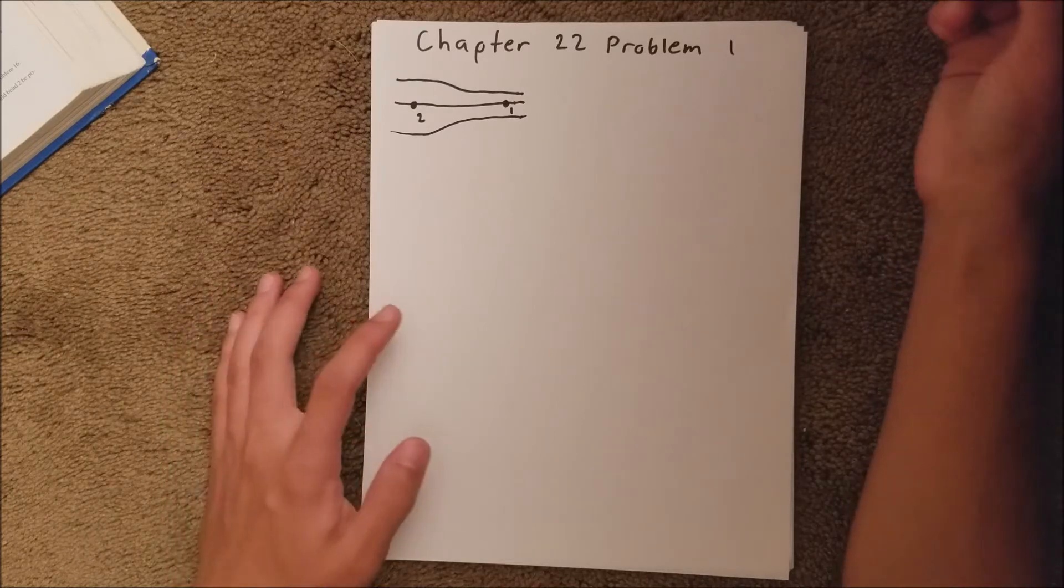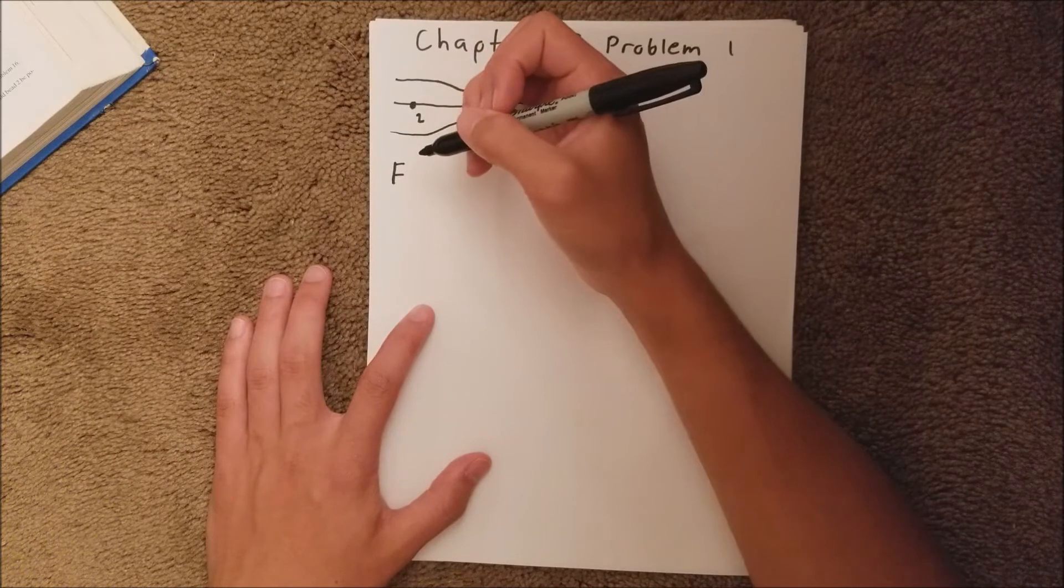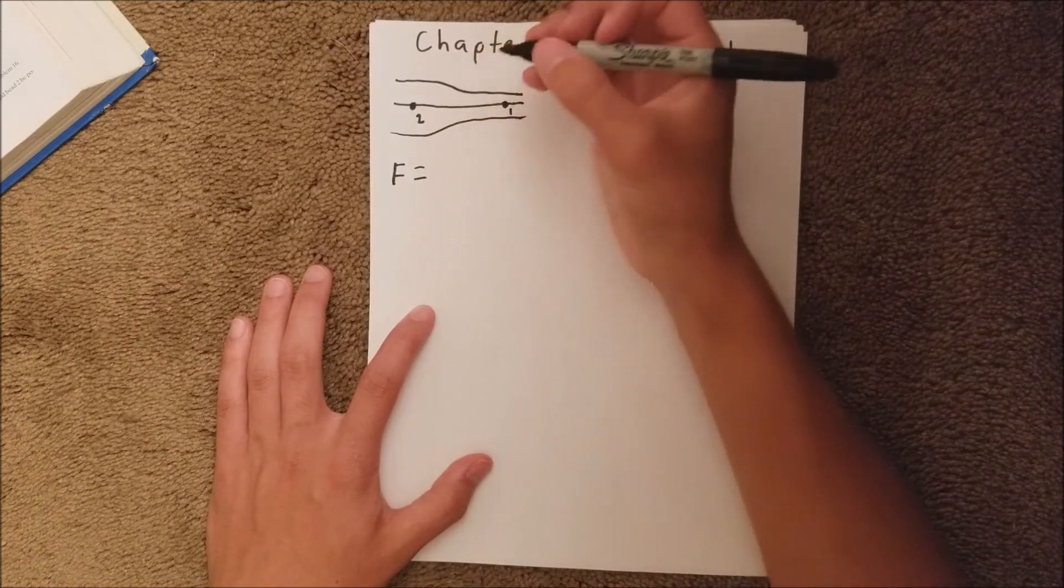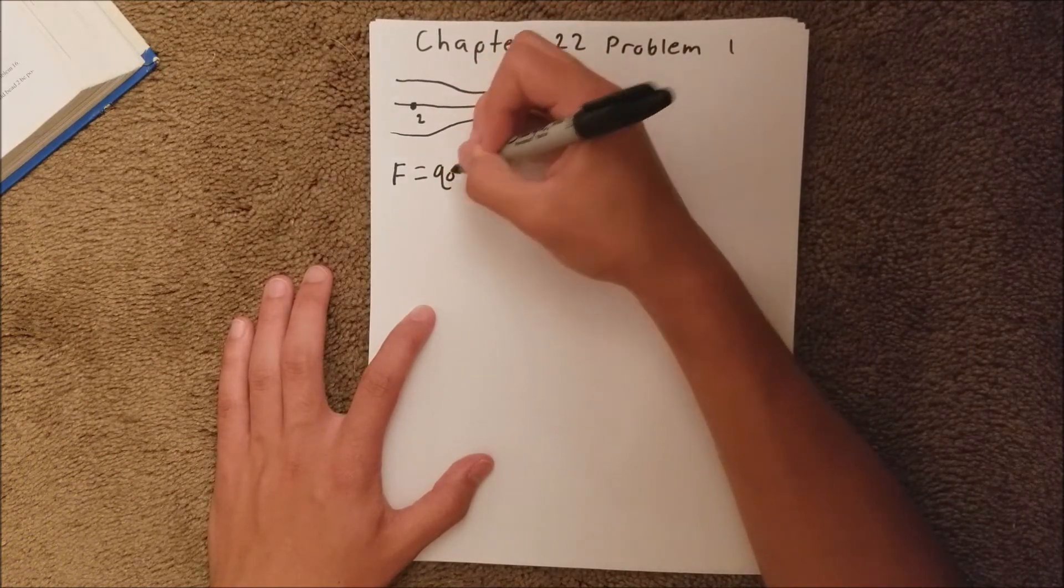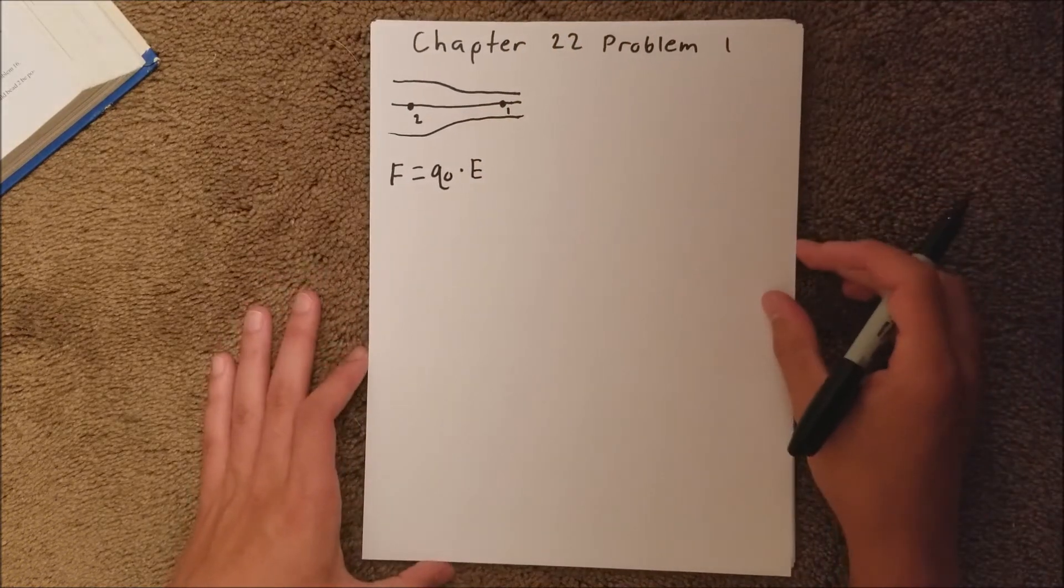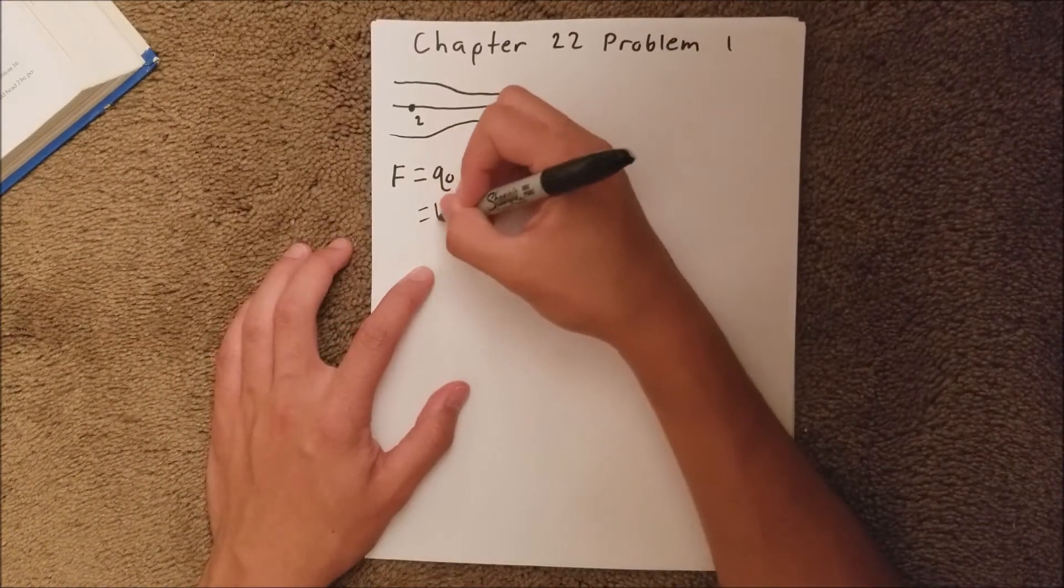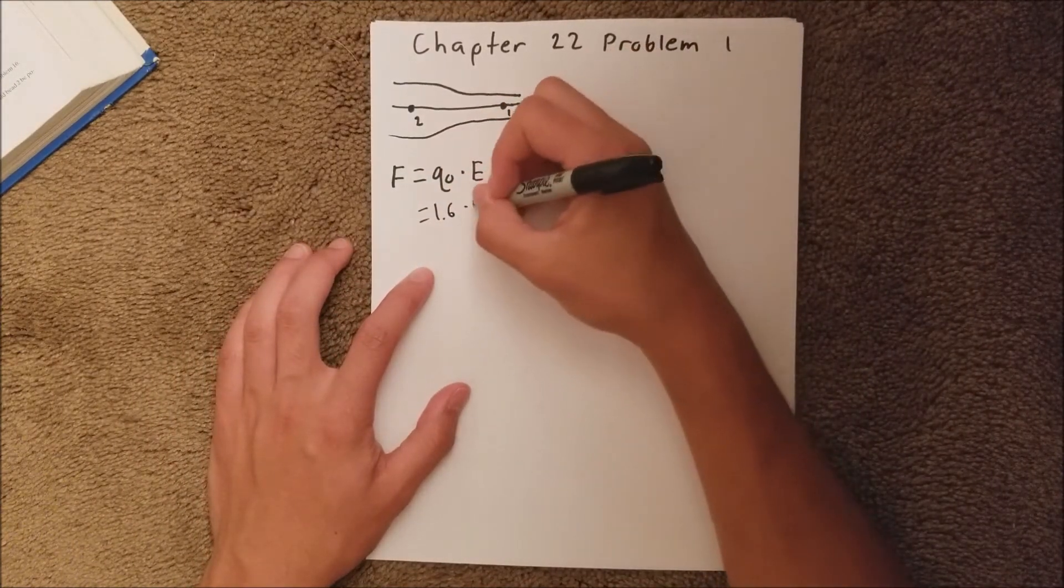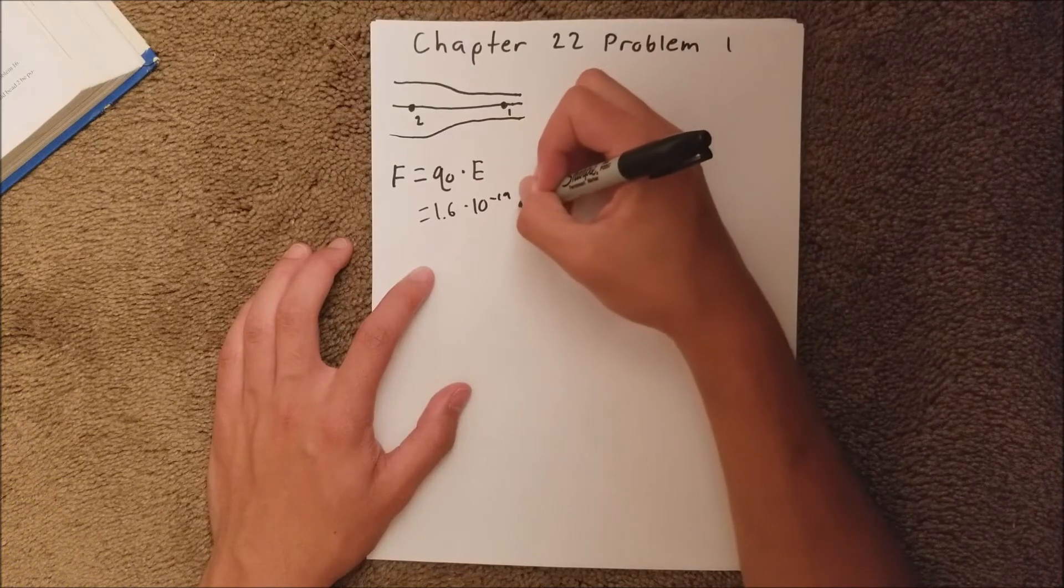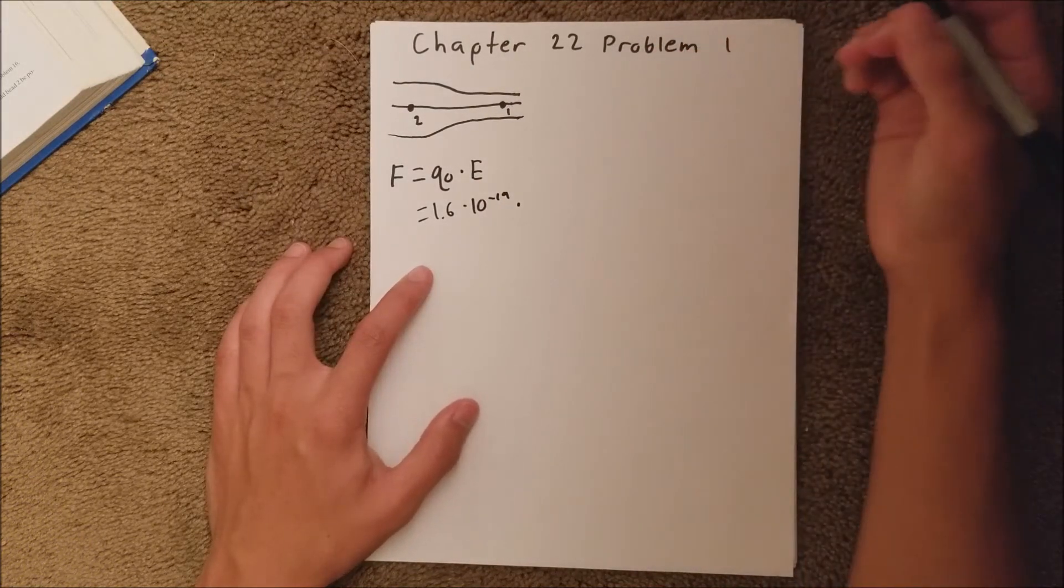The force on a proton is equal to the charge constant times the electric field. That's going to be 1.6 times 10 to the negative 19th times the field, which we're told is 40. But,